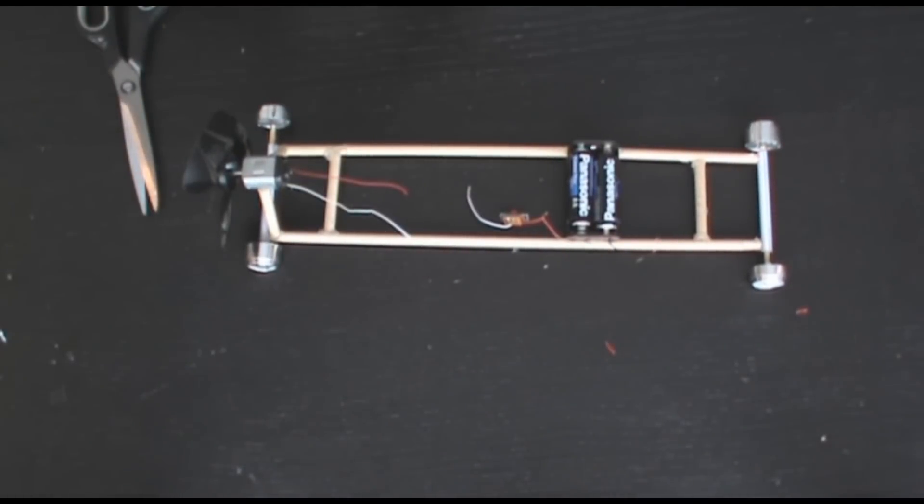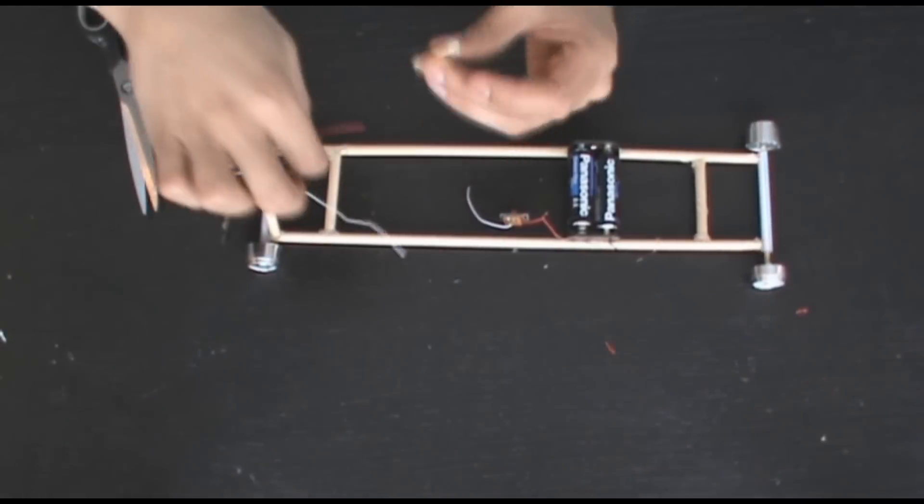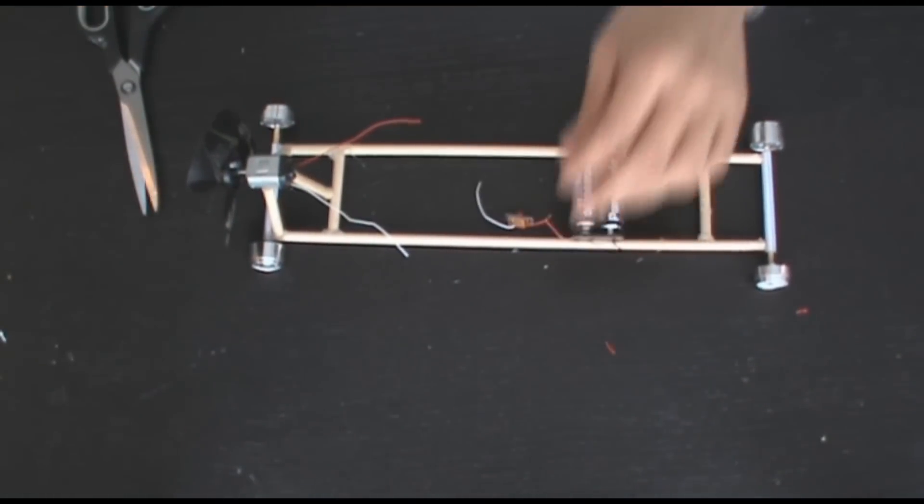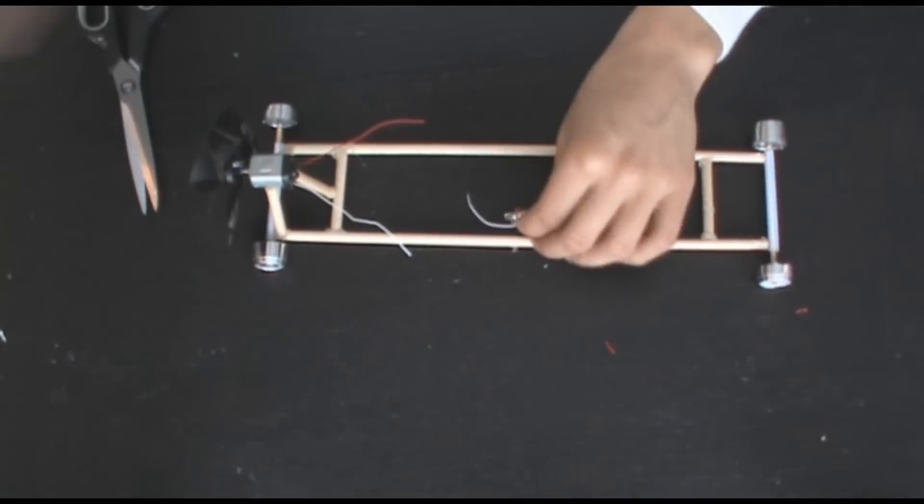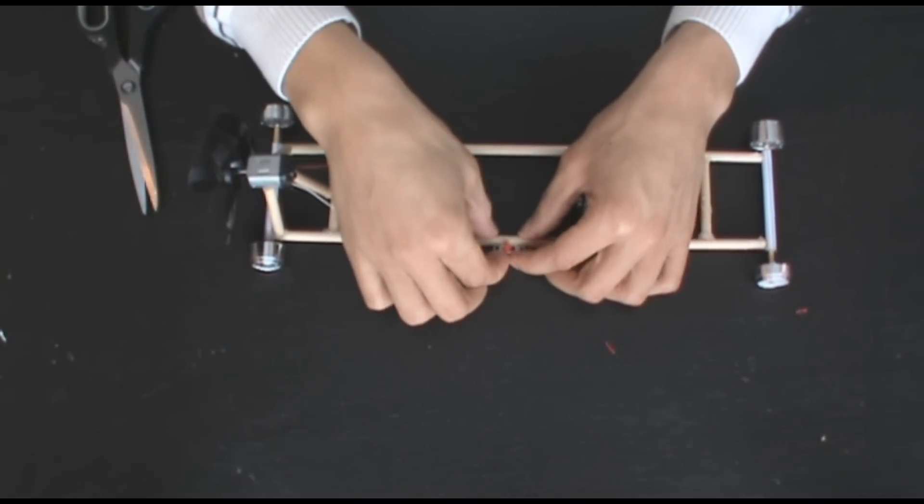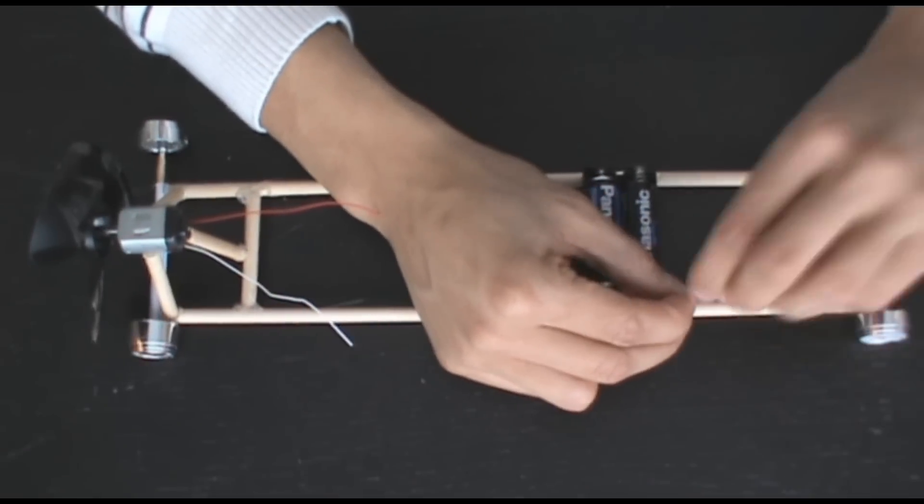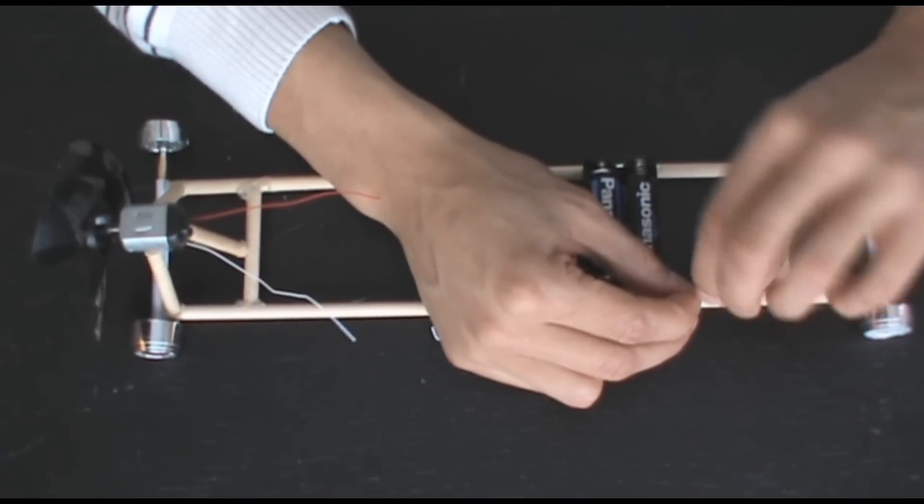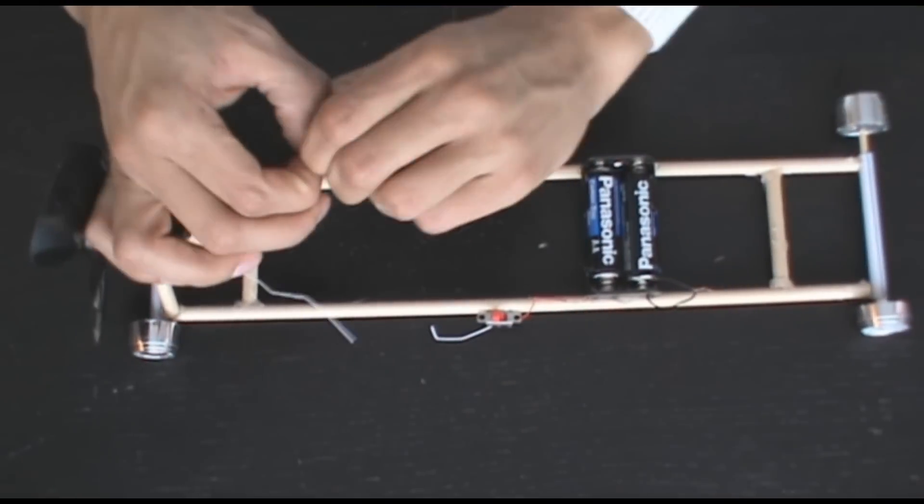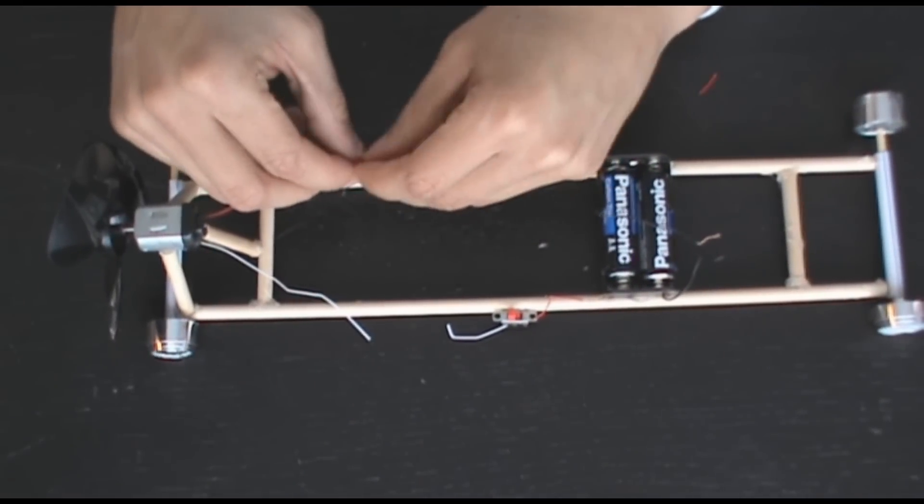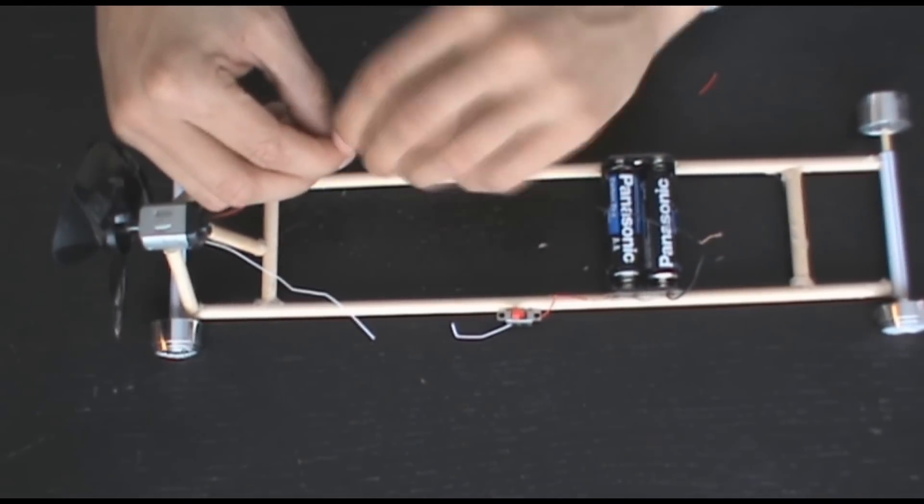Now I'm just going to glue the switch in against the side so it doesn't wobble around. Now I'm going to attach the other side of the battery pack to a side of the motor.